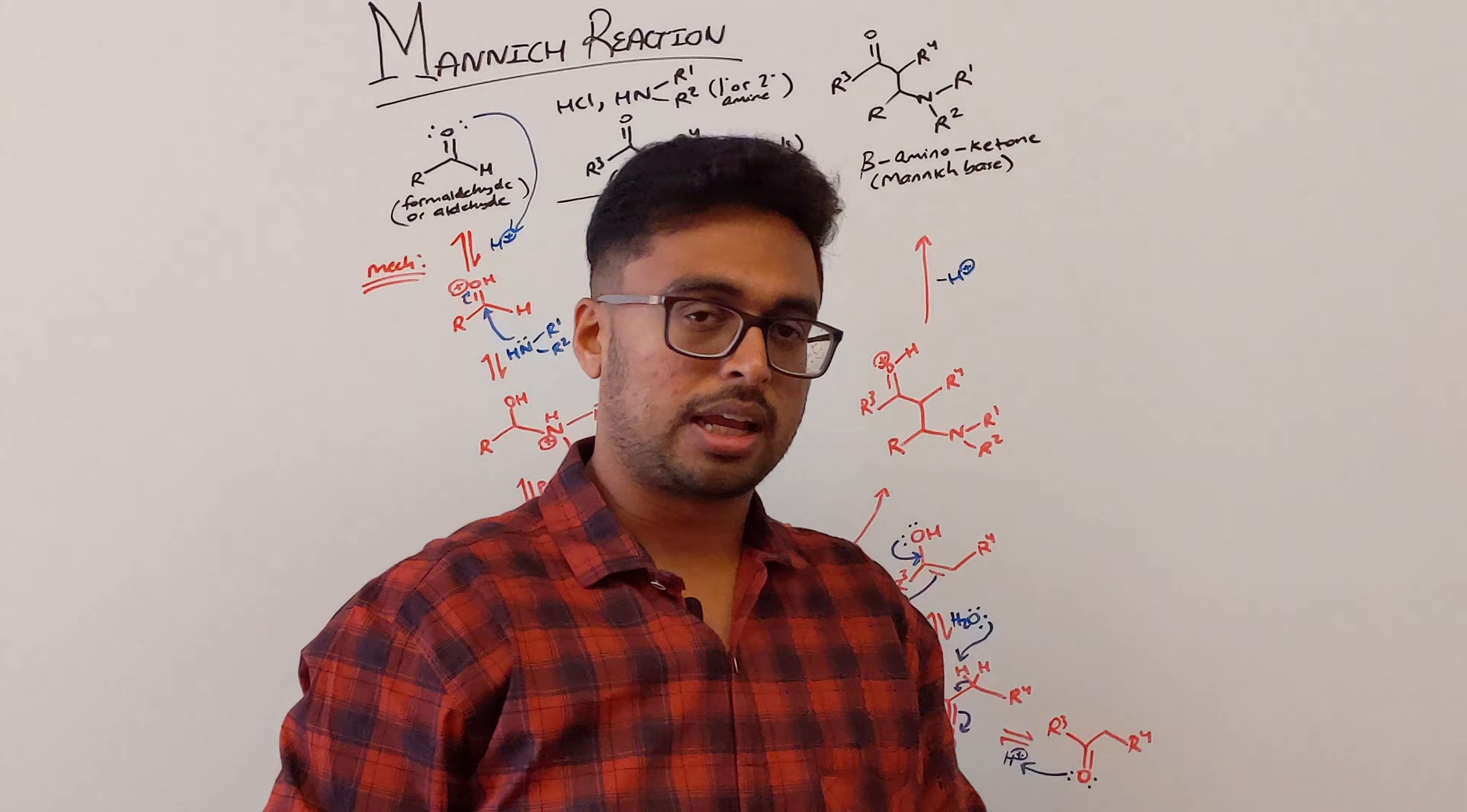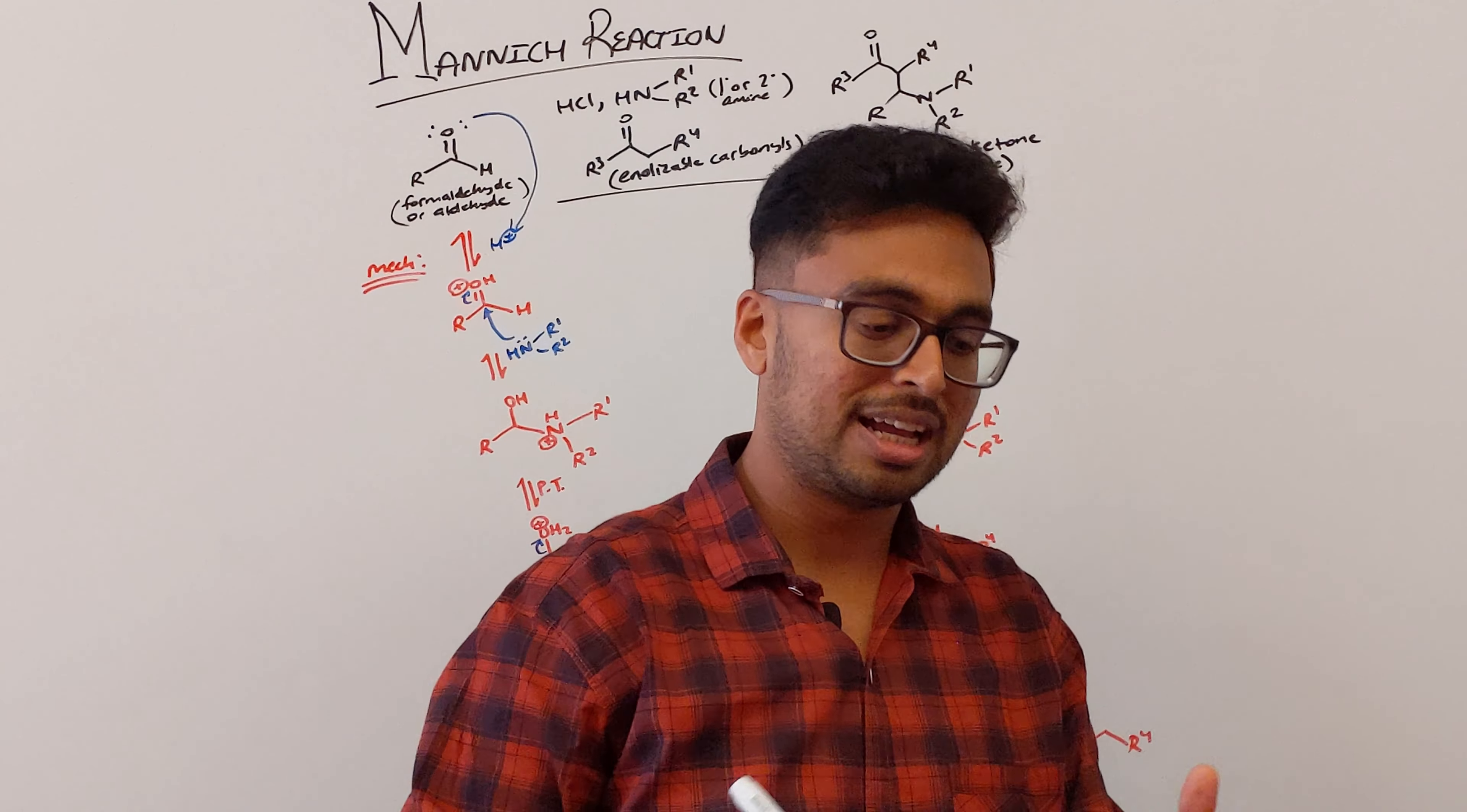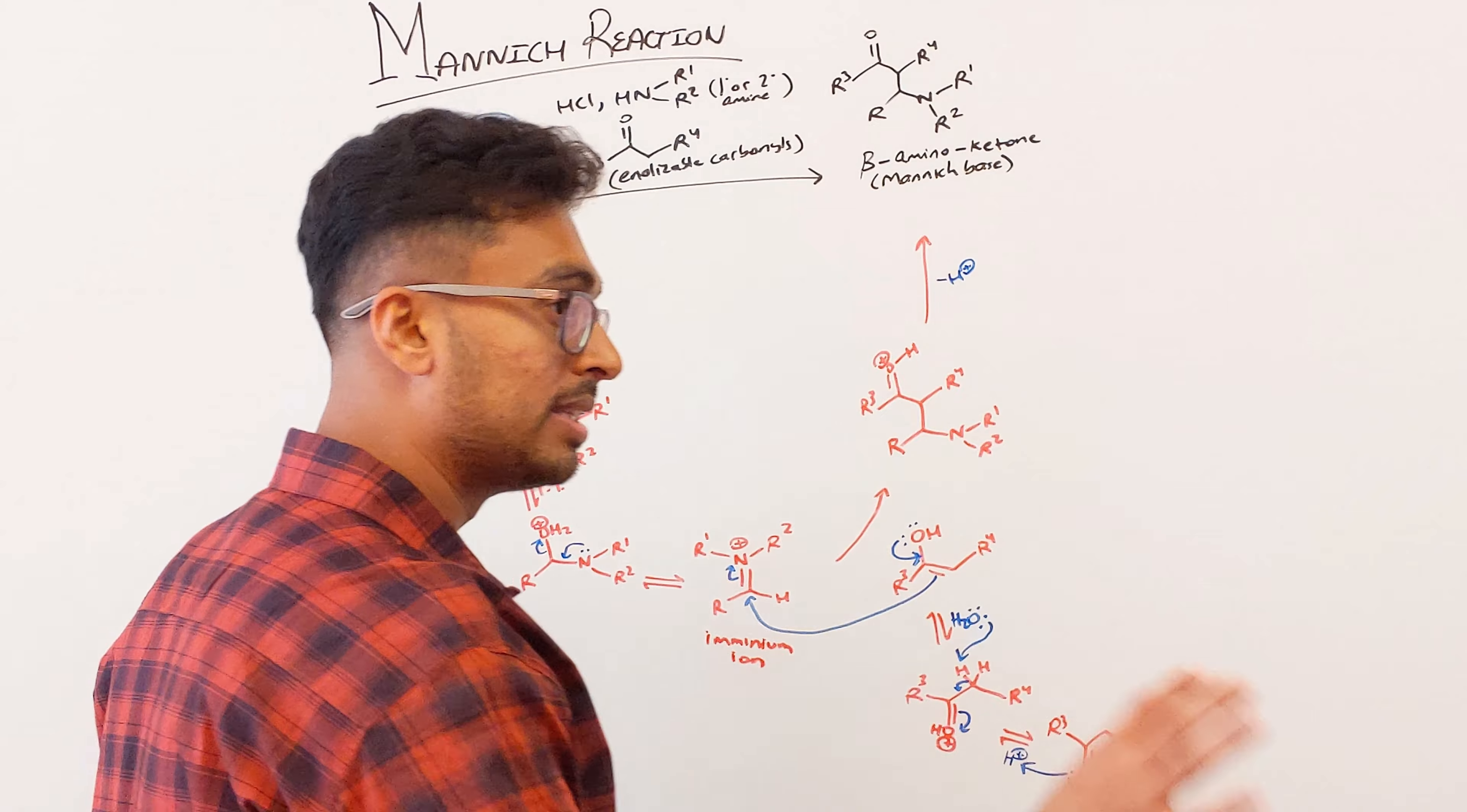So people might be asking how come there is no nucleophilic attack by amine on this enolizable carbonyl and it's here because you remember aldehydes are more reactive than your ketones. So that is the reason this step is going to happen first. So once that's done...